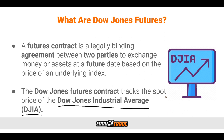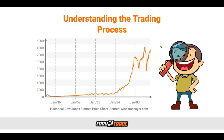Now that we understand what the Dow Jones is, let's talk about what Dow Jones Futures are. A Futures Contract is a legally binding agreement between two parties to exchange money or assets at a future date based on the price of an underlying index. The Dow Jones Futures Contract tracks the spot price of the Dow Jones Industrial Average. The two parties in a Futures Contract are basically betting on where the Dow Jones Industrial Average will trade on a specified day in the future — this is known as the final settlement date. If we were looking to speculate on the Dow Jones Industrial Average, then trading Dow Jones Futures would be a good place to start.